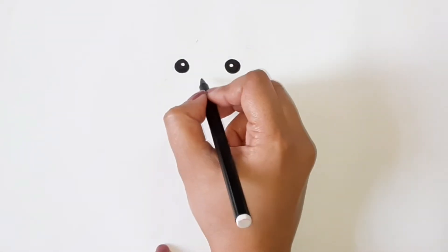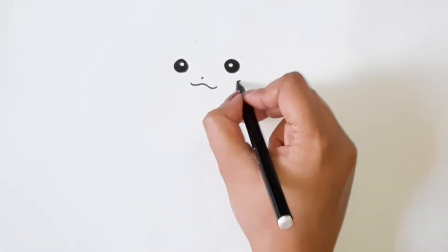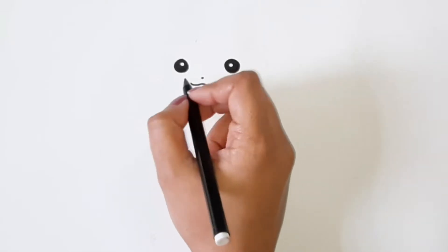The eyes are ready, so now we will draw his mouth like this and then a circle below the eye.